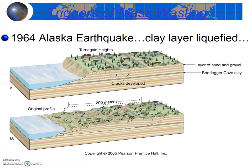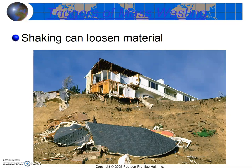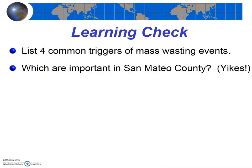Our fourth trigger is earthquakes. When saturated, unconsolidated sediment experiences an earthquake, the material can essentially liquefy. What was once solid earth behaves as a liquid. You can imagine what happens if there is a saturated clay layer below the water table in a sloping region — no friction, gravity wins, and everything above the clay layer simply slides down. That was the case in 1964 up in Alaska, when a whole housing development experienced a mass wasting event during the earthquake. Shaking during an earthquake can also loosen rocks and foundations and cause highly jointed rocks to fail. I encourage you to pause the video here and list the four common triggers of mass wasting events. You should be able to briefly describe each as well.